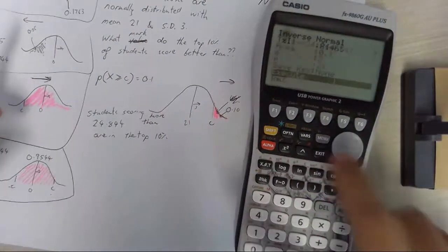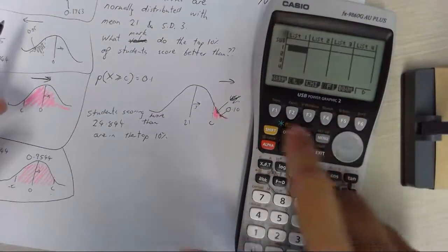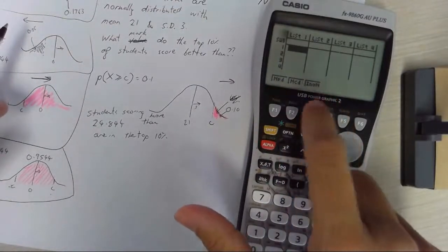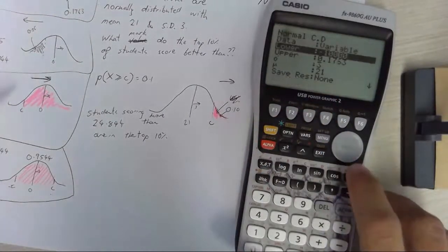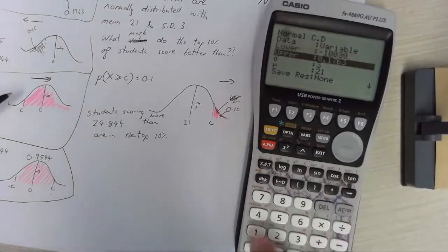Now of course I can double check that and I will because it seems like an important question. Normal cd.